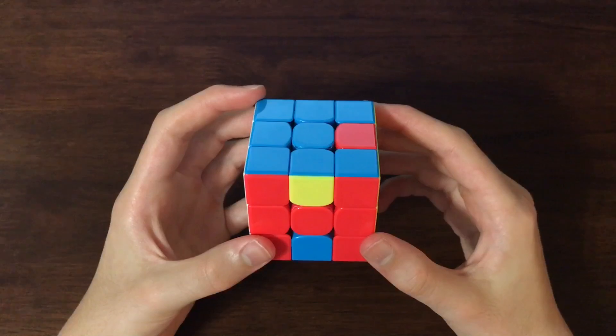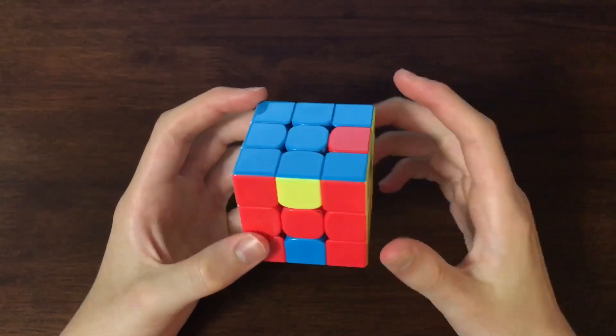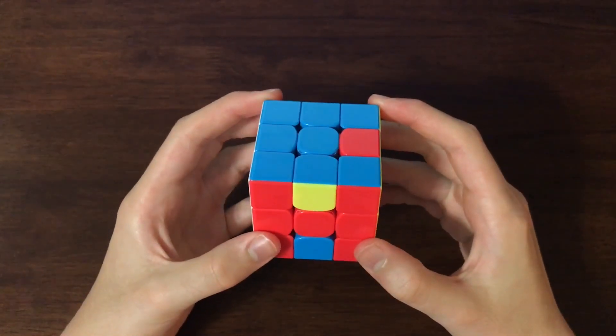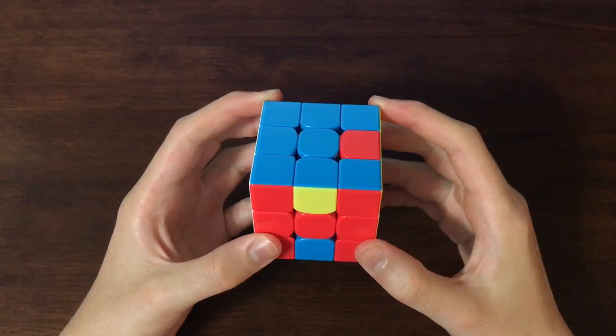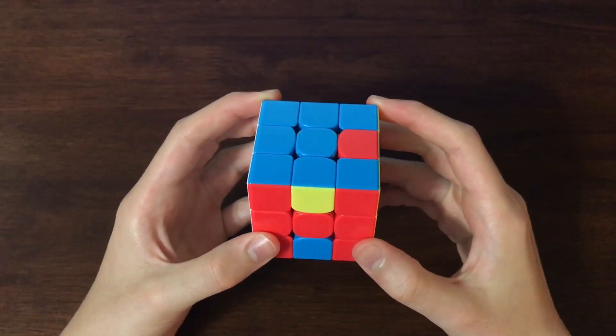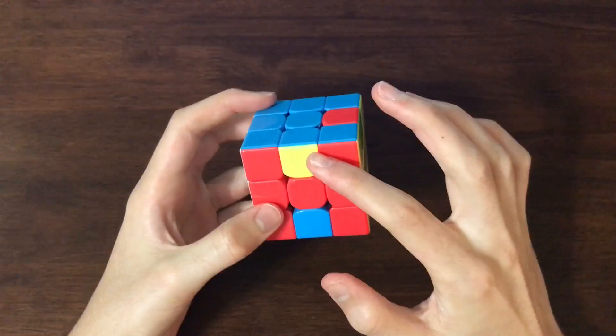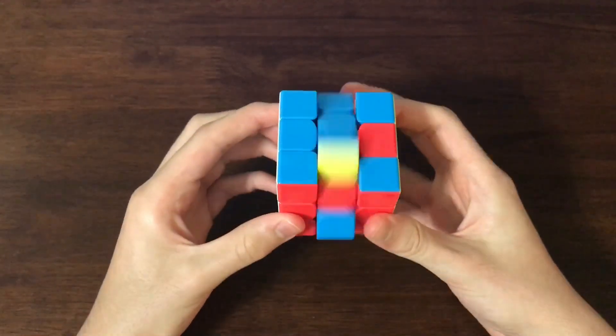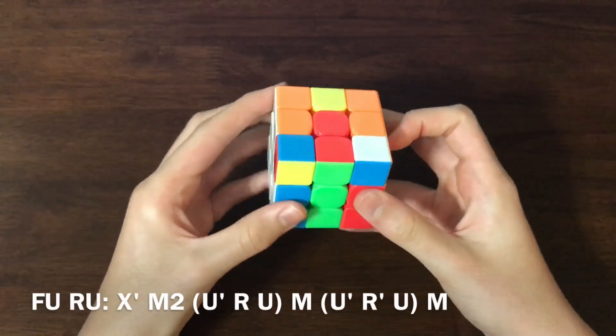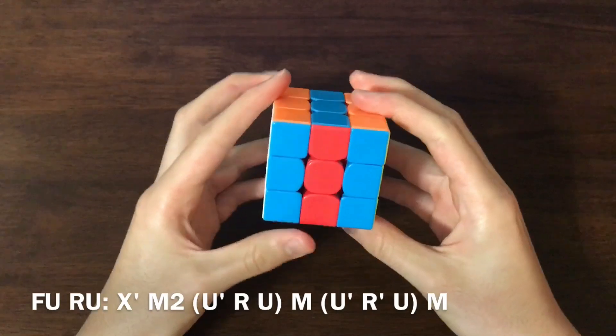So, our final example is FU, RU, or IM in Speffz. And the pattern for FU as the first target is M2, setup move, M, undo setup move, M. So, since we have FU as the first target, we're going to do M2, setup move, M, undo setup move, M.